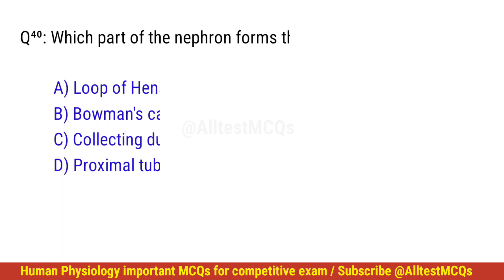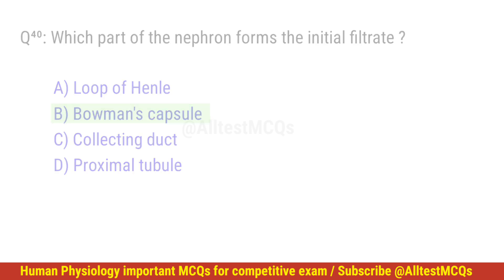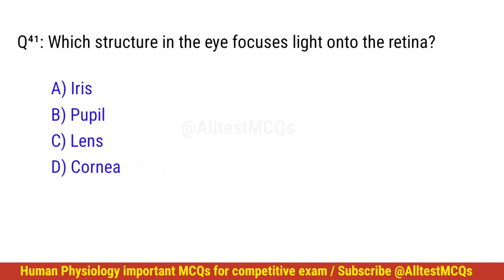Question number 40. Which part of the nephron forms the initial filtrate? The right option is B: Bowman's capsule.